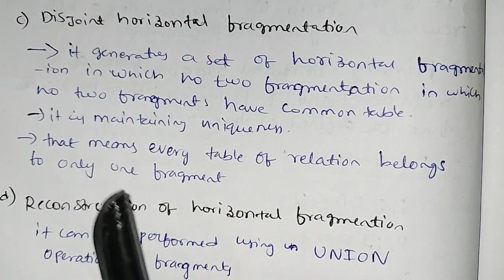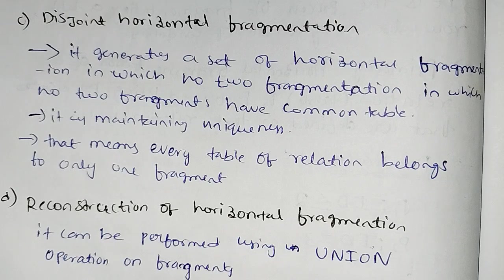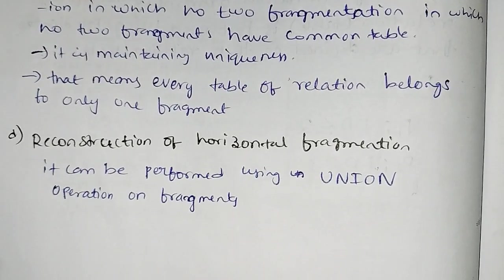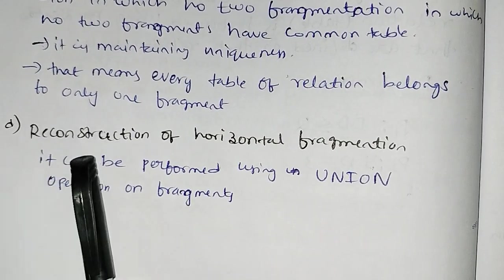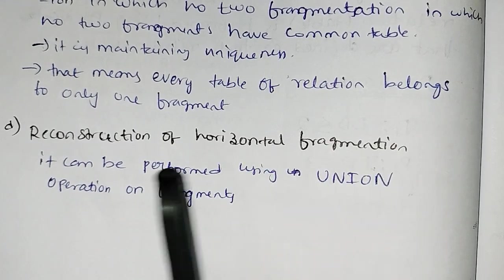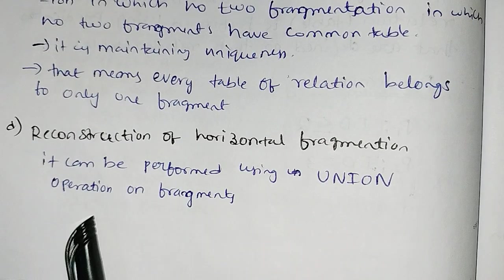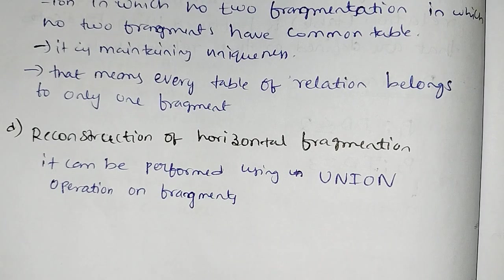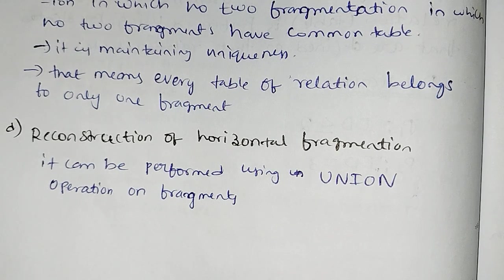The fourth type is reconstruction of horizontal fragmentation. It can be performed using the union operation on fragments. The union operation is used on the fragments for reconstruction of horizontal fragmentation.